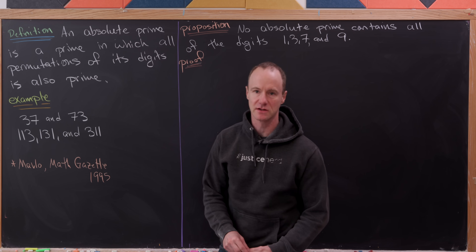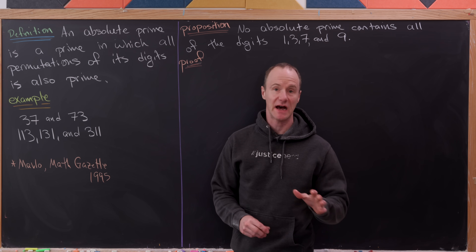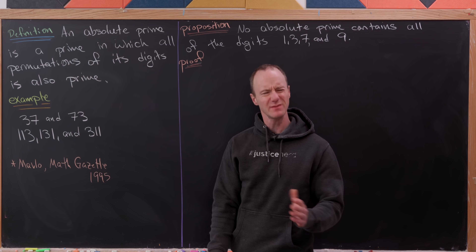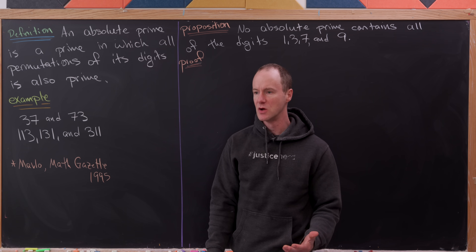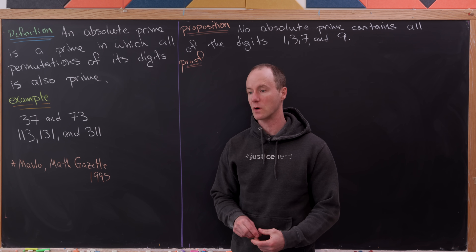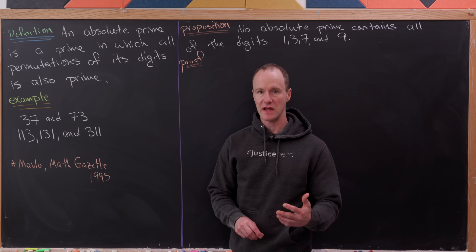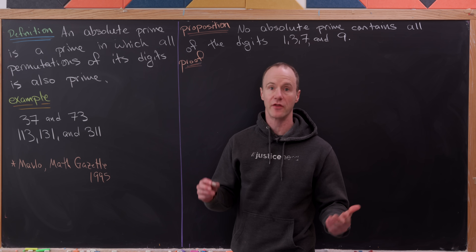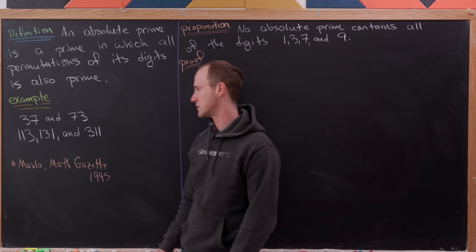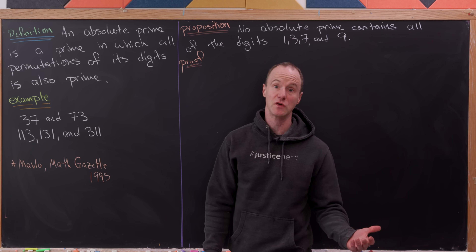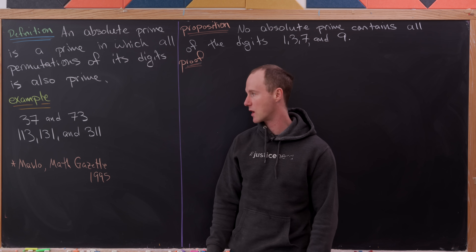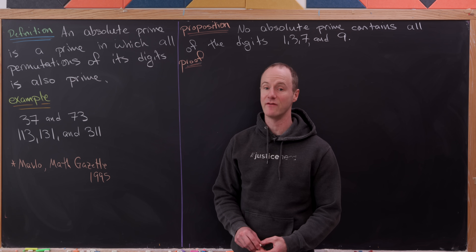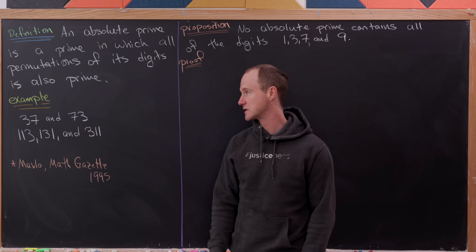Today we're going to look at something called an absolute prime and prove a couple of nice results regarding these. An absolute prime is also called a permutable prime. It's a prime so that if you shuffle around the digits any way you want, you still get another prime number. For example, 37 and 73 are both prime, so that's an example. And 113, 131, and 311 are all prime, meaning they're all absolute primes as well.